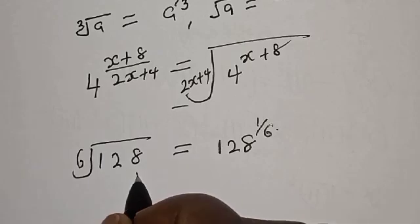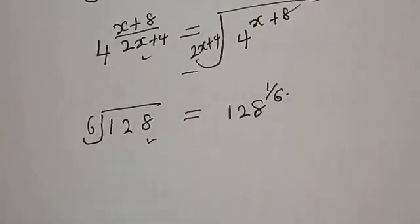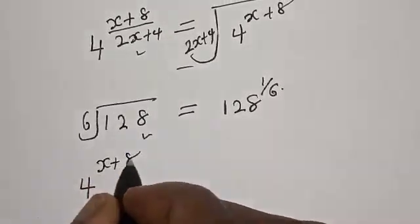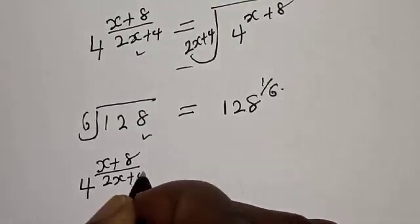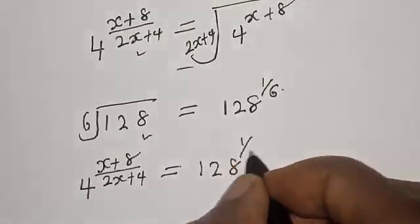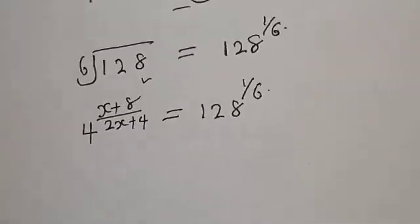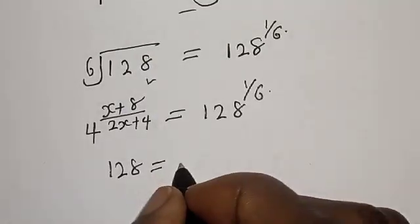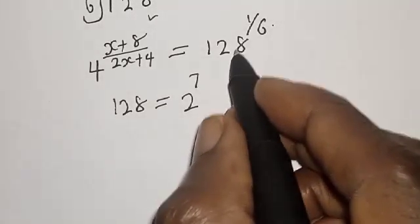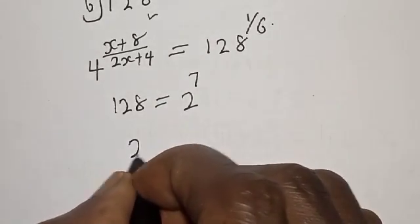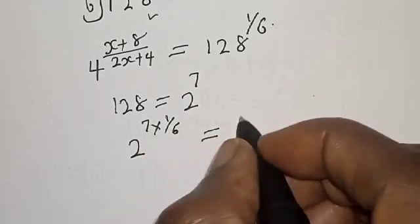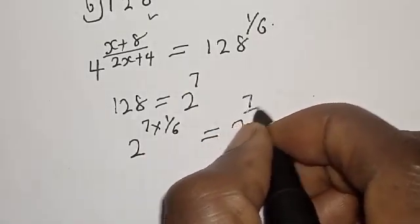This is our right-hand side and this is the left-hand side. Substituting, we have 4 raised to power (x+8)/(2x+4) is equal to 128 raised to power 1 over 6. Note that 128 is the same thing as 2 raised to power 7, so the right-hand side becomes 2 raised to power 7 over 6.